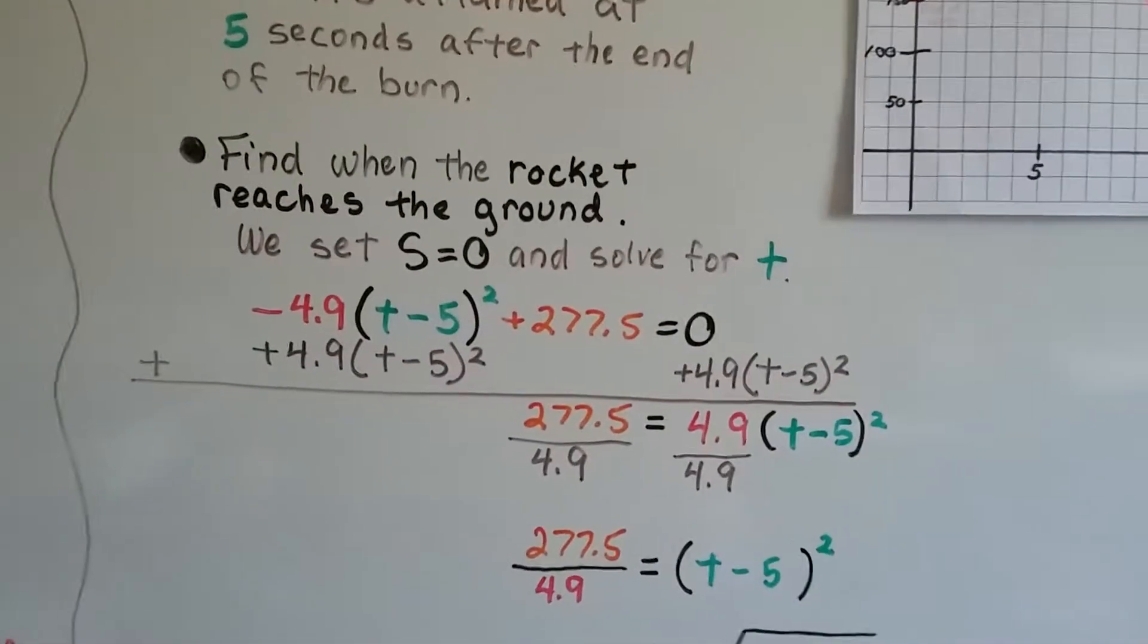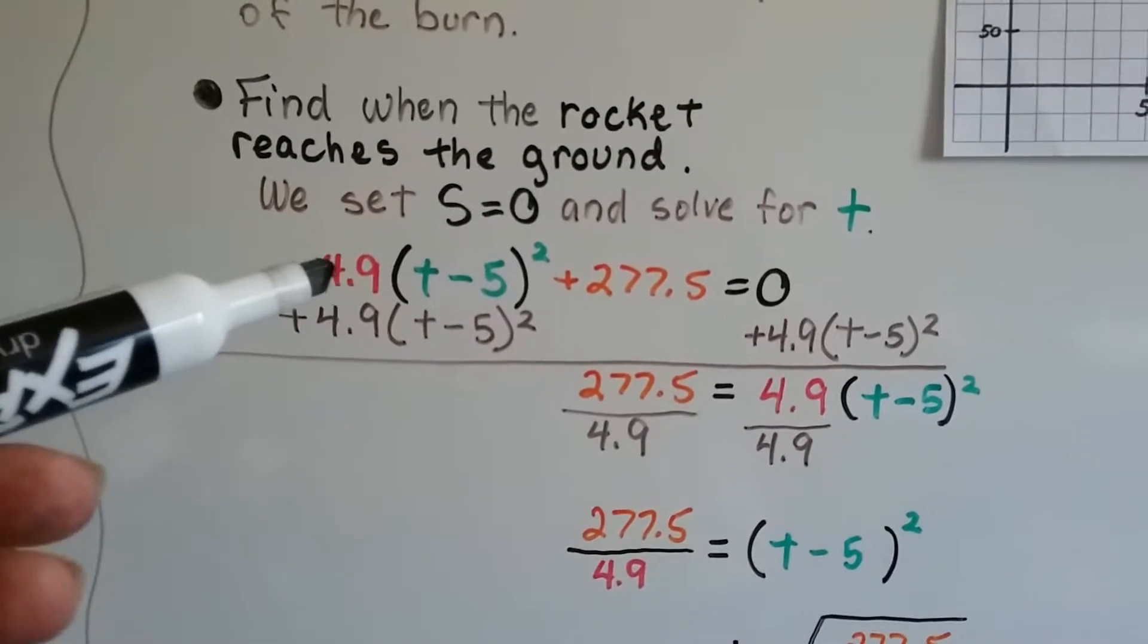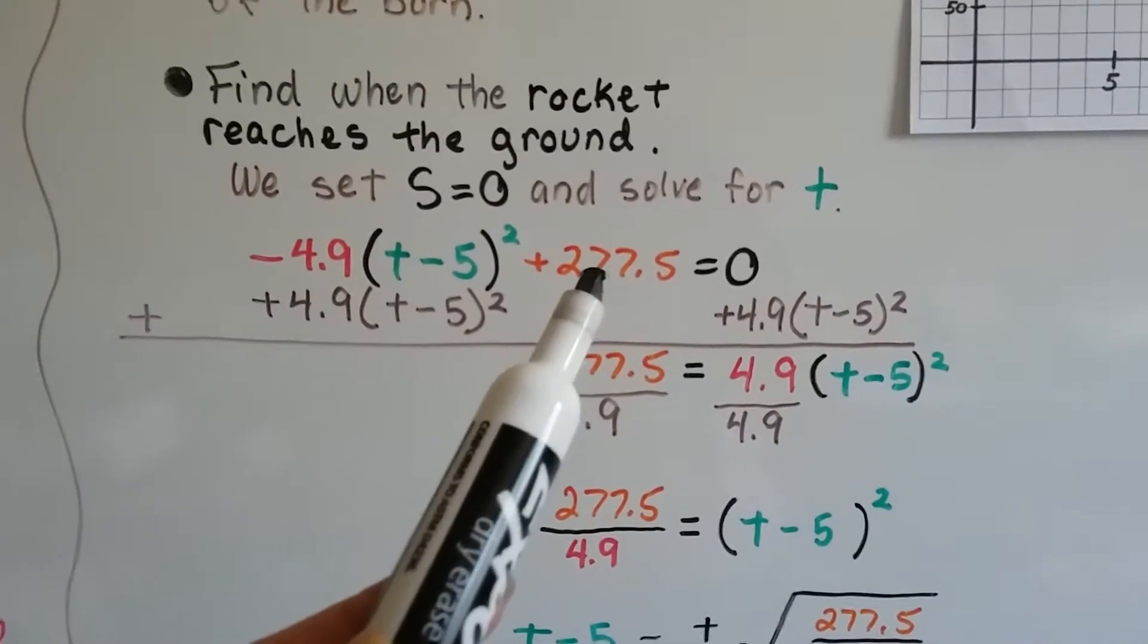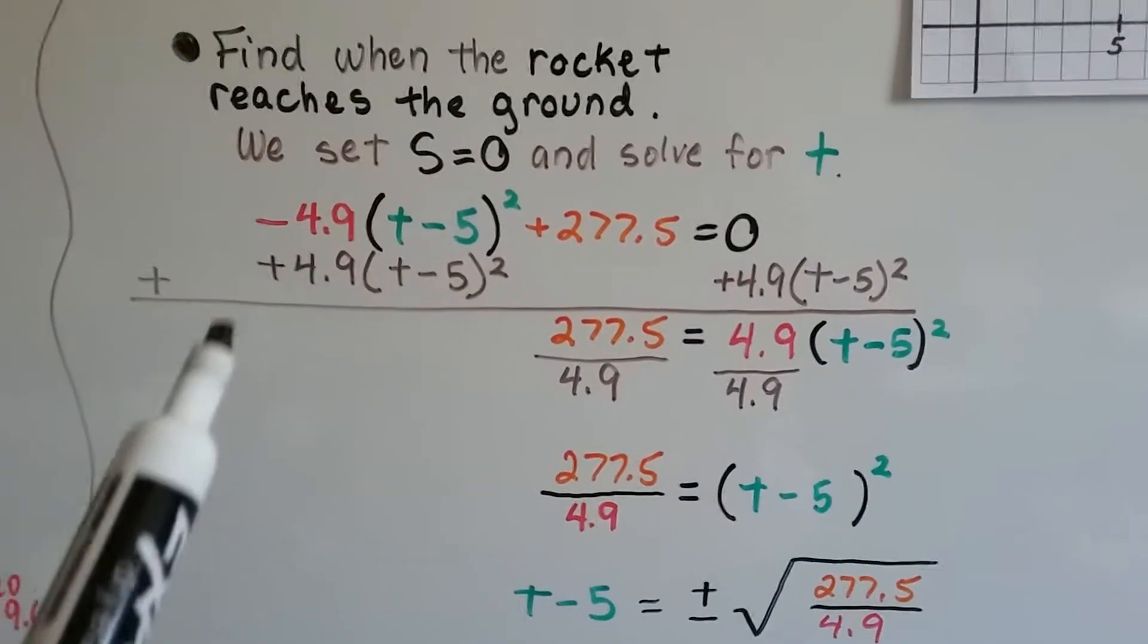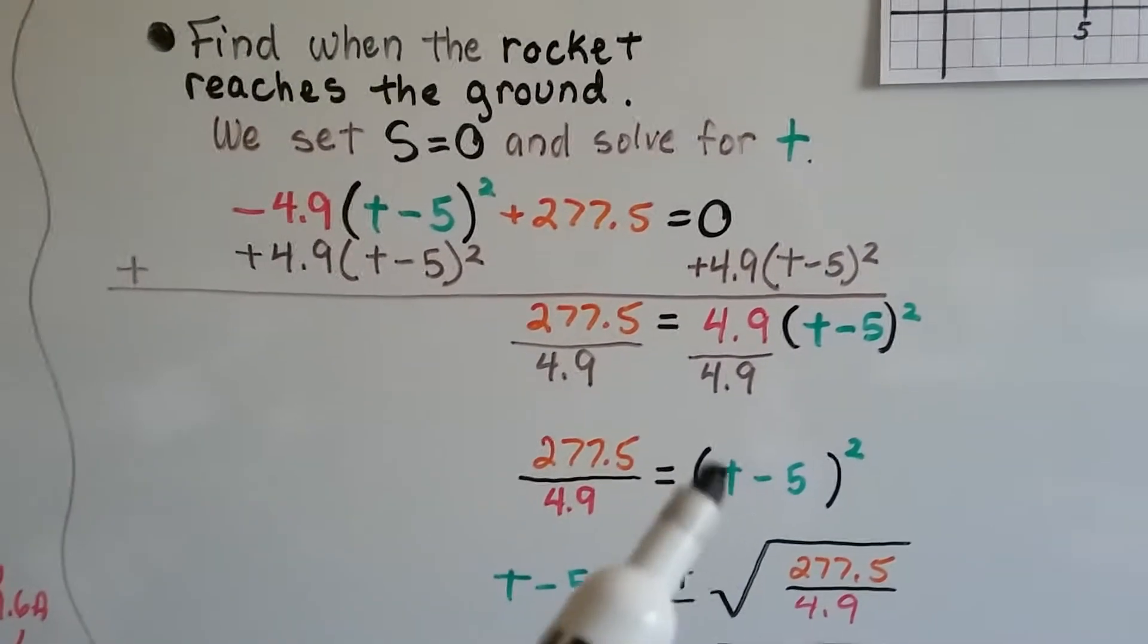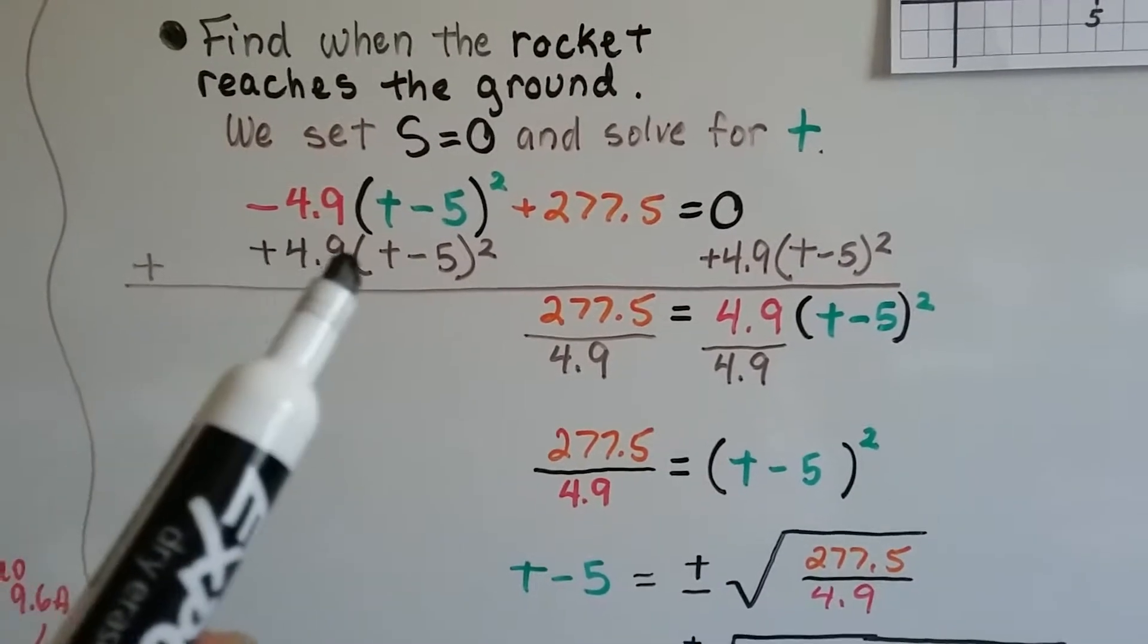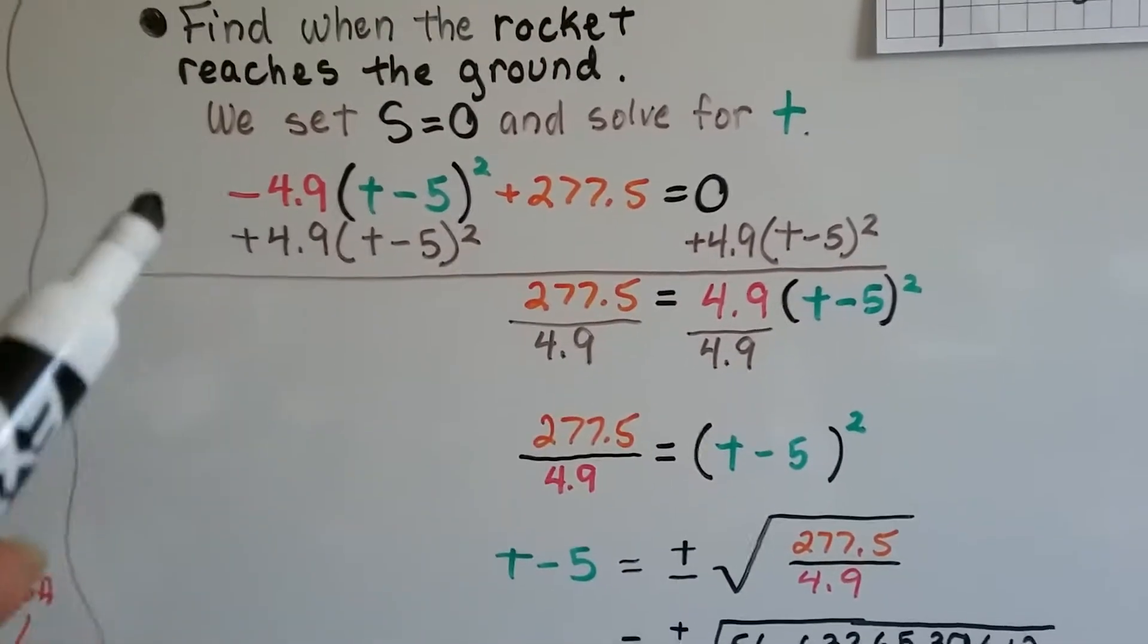We're going to set s to equal 0 and solve for t. We've got a negative 4.9 times the square of t minus 5 plus that maximum height of 277.5, and we set it to equal 0. We want to isolate this t minus 5. We're going to start by adding a 4.9 times the square of t minus 5 to each side of the equation.